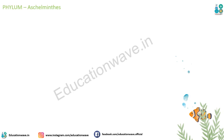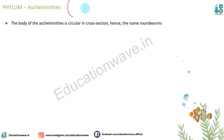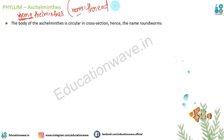Ab Phylum Aschelminthes - inhe dhyan se padhiye kyunki inke paas kuch nayi features hain jo pichhle wale mein absent thi. Aschelminthes ko hum thread worms bolte hain. Inhe Nemathelminths bhi kehte hain - jahan 'neema' (N-E-M-A) means thread aur 'helminths' means worms - isliye inhe thread worms bhi kehte hain.